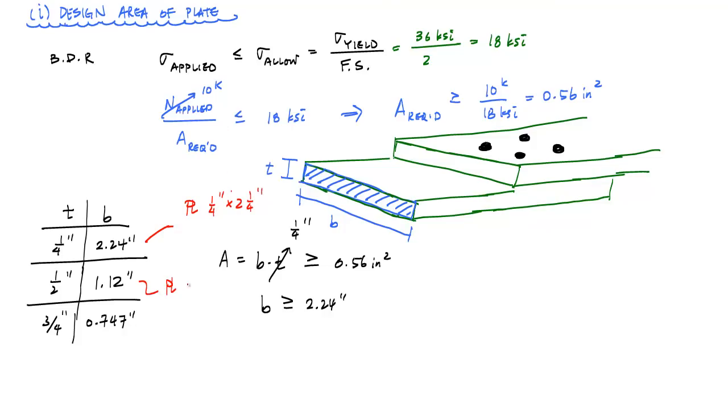And if I choose a half-inch thick plate, I would want to specify a half-inch by one and a quarter-inch plate. And if I choose this, then I might choose a square rod here. This would be a plate that's 3-quarter-inch by 3-quarter-inch. And so these would be my designs. One of these three would be the design for my plate to satisfy this basic design relationship with respect to yielding of the gross area.